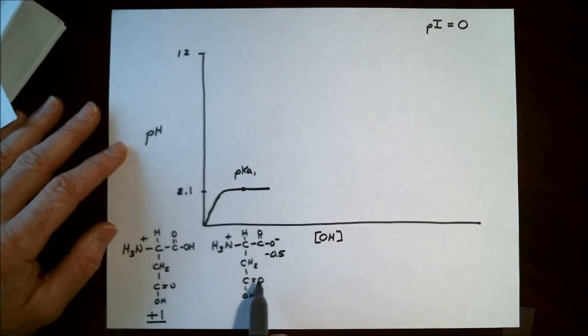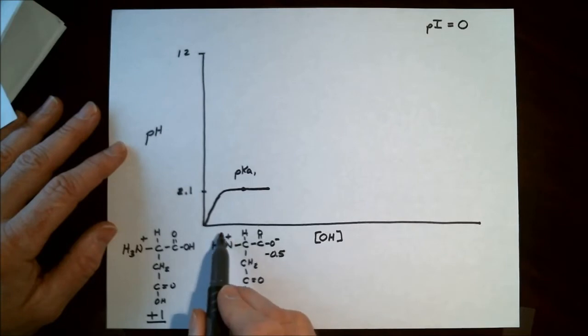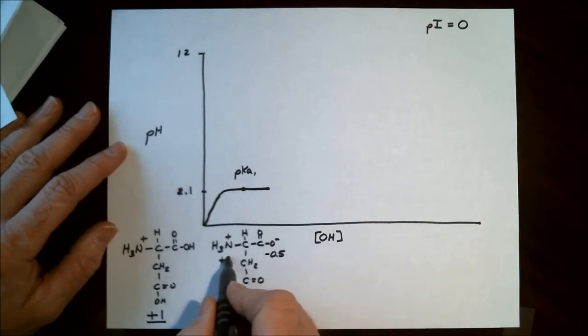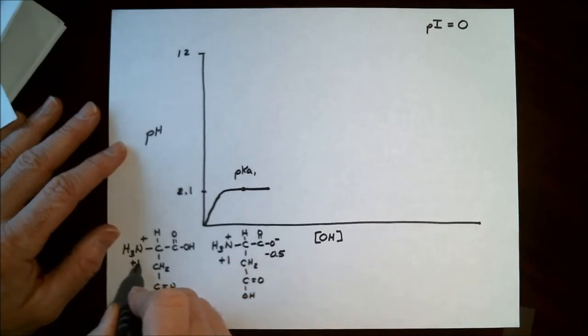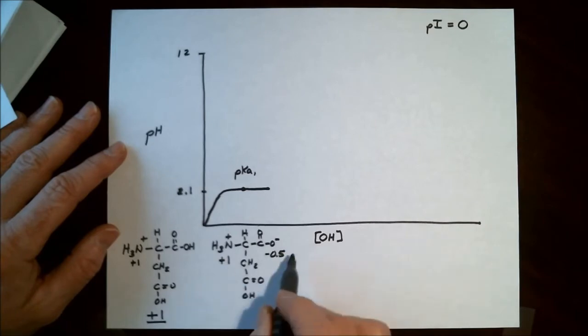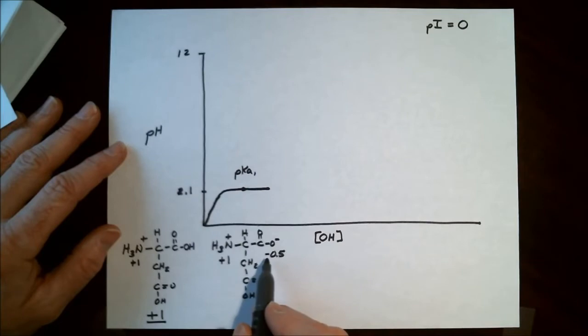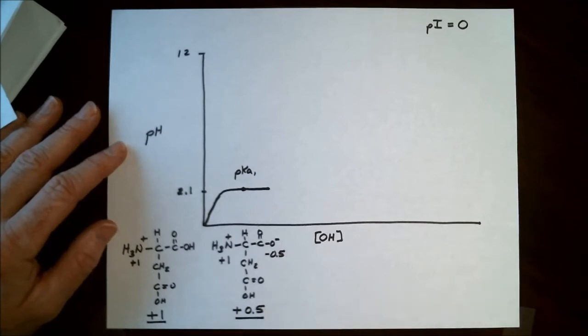The R-chain carboxylic acid is still protonated, so that will be neutral. The primary amine, because this is a basic group, will still have its plus 1 charge. So the overall charge on this particular molecule is plus 1 minus 0.5. So the overall charge is plus 0.5.